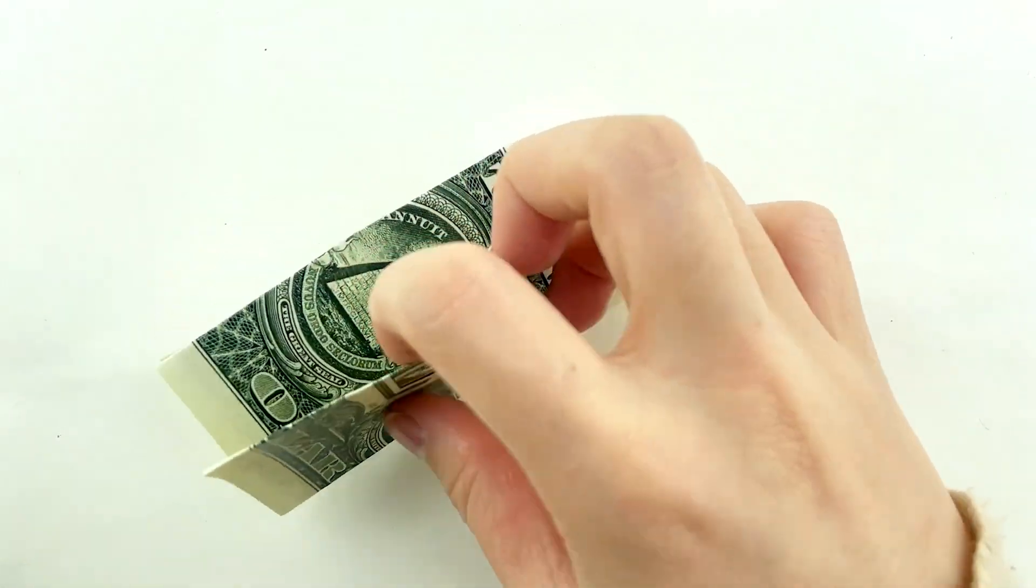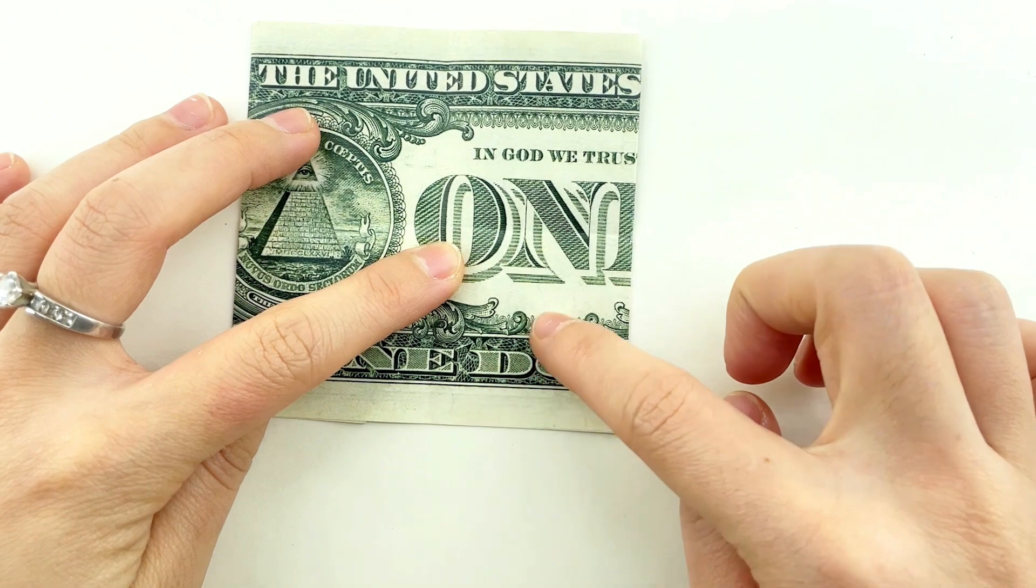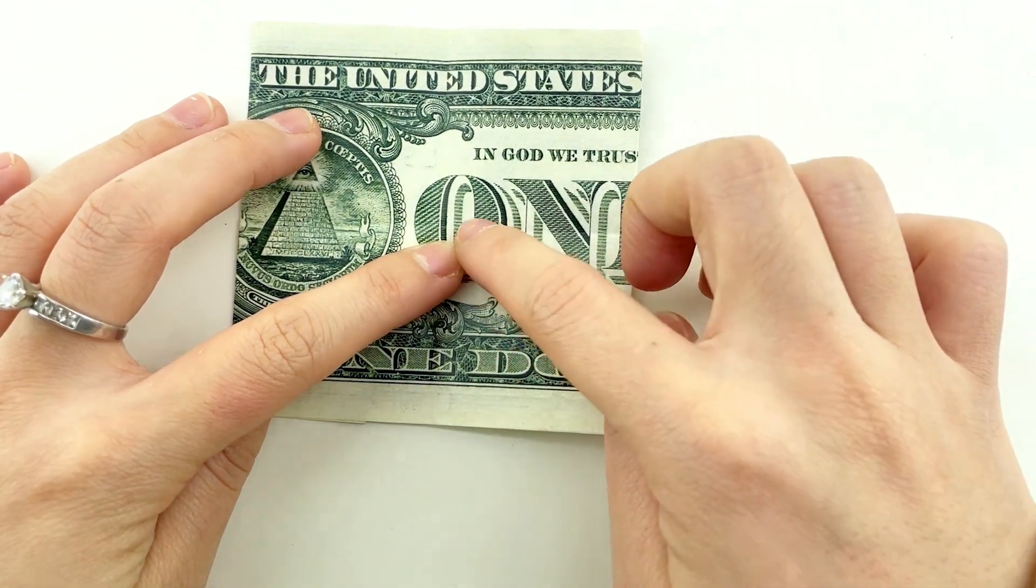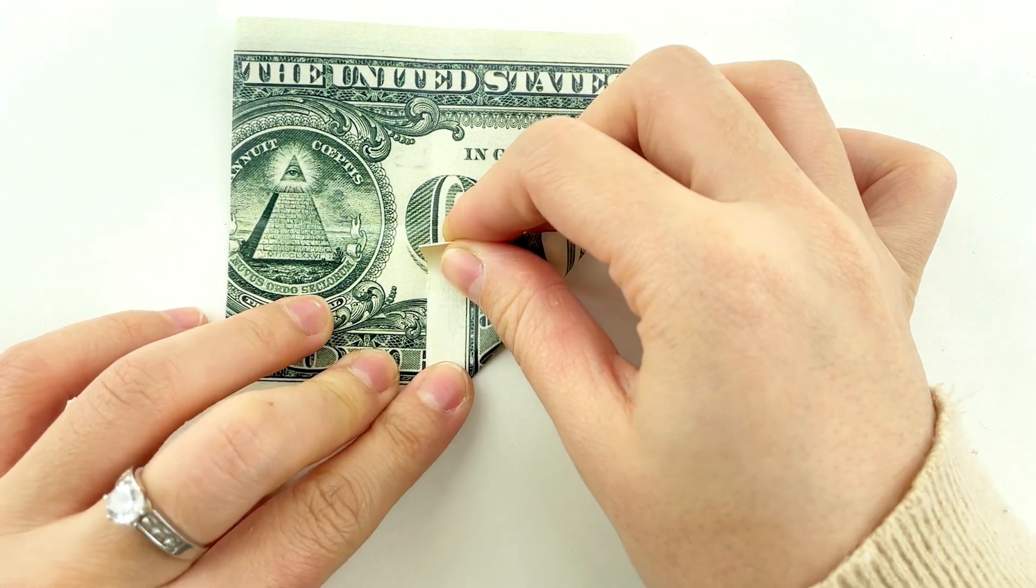Now, let's add some character. Cross valley fold up the two bottom corners, giving your pup some perky paws. And don't forget the other side.